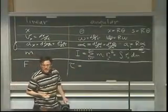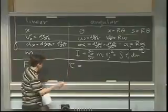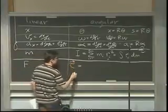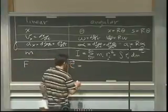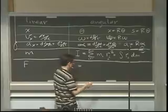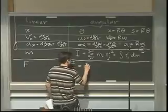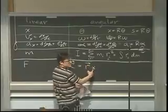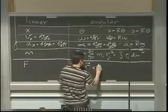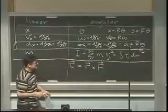We would talk about torque as a vector, and we would define it this way. For those of you who are familiar, we'll see what's going on. But then we're going to forever think about it as a scalar, as a number, and we'll keep track of the sign. Torque is r cross F — and this is not times, it's a cross product. R cross F.